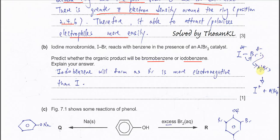The bromide will combine with the catalyst to form AlBr4 negative, and at the same time the electrophile, I positive, will form. This electrophile will further react with the benzene ring and undergo electrophilic substitution, forming iodobenzene. Iodobenzene will form as Br is more electronegative than iodine.